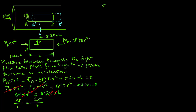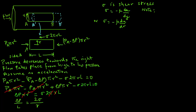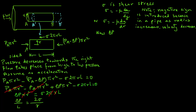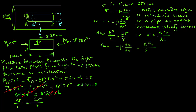Note that σ, the shear stress, equals −μ × dU/dy — you may want to look at the module on viscosity where we develop this expression. We replace dy with dr because we are working in cylindrical coordinates, so σ = −μ dU/dr. Substituting into ΔP/L = 2σ/r, we get σ = ΔP·r / (2L), and therefore −μ dU/dr = ΔP·r / (2L). Rearranging: dU = −ΔP·r·dr / (2μL).